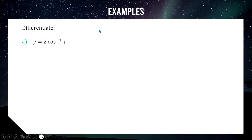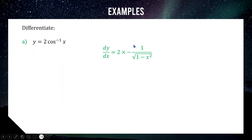Let's go through a bunch of questions to build confidence. First one: find the derivative of y equals 2 cos inverse x. We differentiate cos inverse x using our rule and put 2 out the front. The derivative of cos inverse x is negative 1 over the square root of 1 minus x squared, so multiplying by 2 gives us negative 2 over the square root of 1 minus x squared.